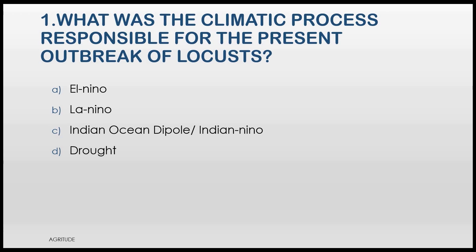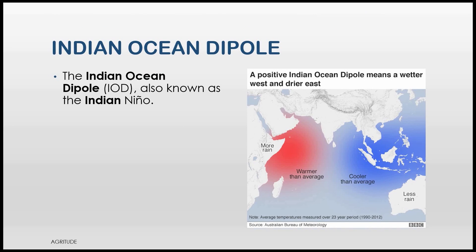What was the climatic process responsible for the present outbreak of locusts? The options are A. El Nino, B. La Nino, C. Indian Ocean Dipole or Indian Nino, D. Drop. Are you ready to answer this? And the answer is Indian Ocean Dipole, also known as Indian Nino.